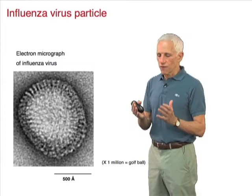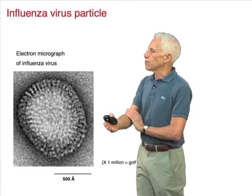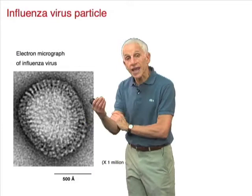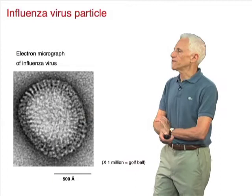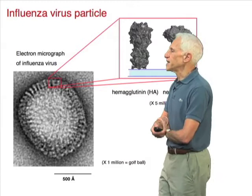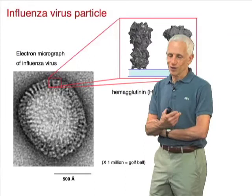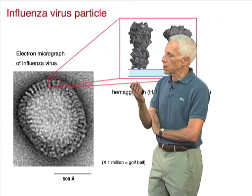Now, not all enveloped glycoproteins form such a regular array. In the case of the influenza virus particle, the proteins on the surface of the virus particle sticking out from the membrane are rather spike-like. There are two of them — two species — the hemagglutinin and neuraminidase, the H and N of H1N1 or H5N1 that you read about when pandemics threaten.